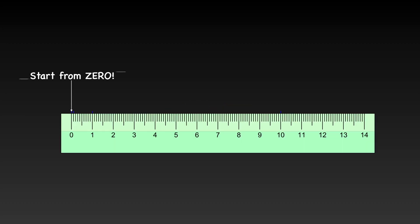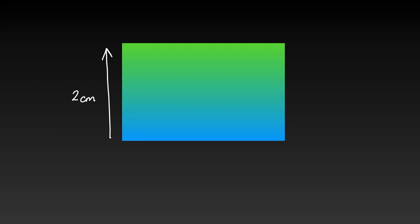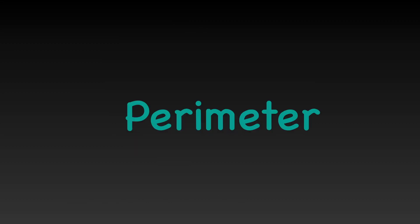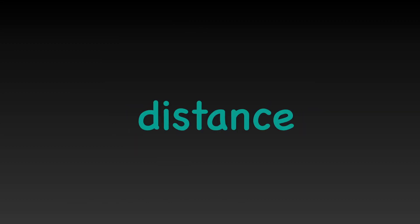Find the centimeters on your ruler, measure them up and add them together. Perimeter is the distance around a shape.